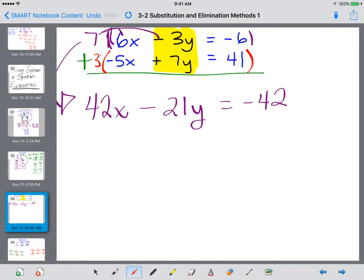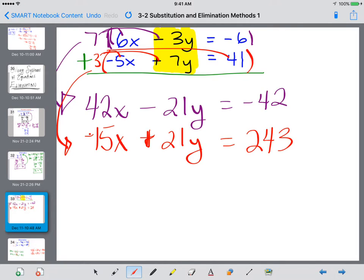Now I'm going to multiply the bottom by 3, and I'm going to come up with my new equation below it. 3 times negative 5 is negative 15x, 3 times 7 is a positive 21y. I'm going to multiply 3 times 41 is 243. Oh, I'm sorry. What am I doing? 3 times 41 is 123. Apologies.